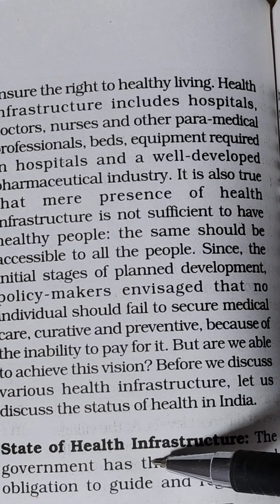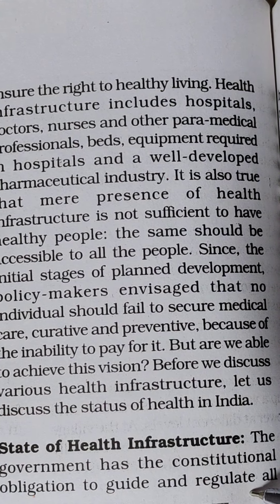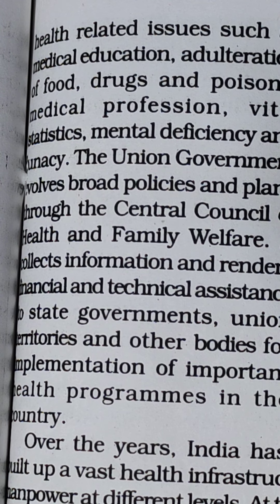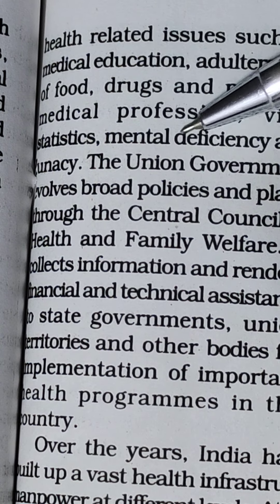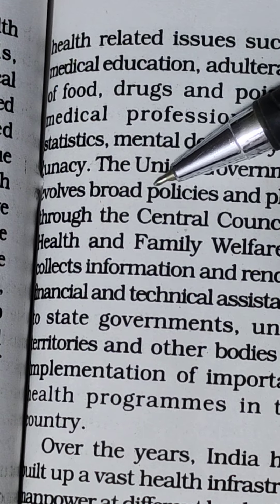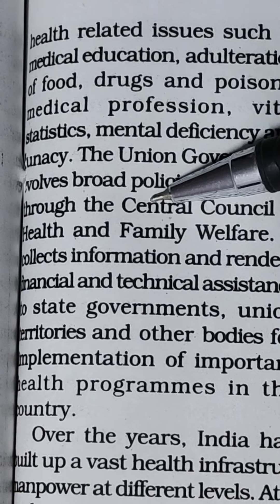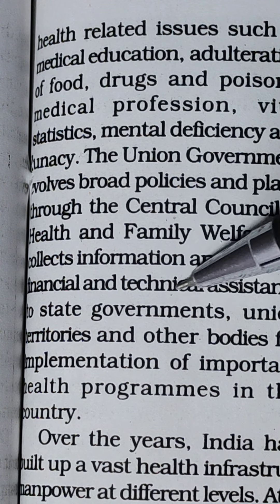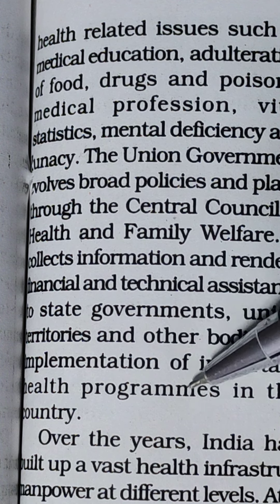Before discussing various health infrastructure aspects, let us discuss the state of health infrastructure. The government has the constitutional obligation to guide and regulate all health-related issues such as medical education, adulteration of food, drugs and poisons, medical profession, vital statistics, mental deficiency and lunacy. The union government involves broad policies and plans through the Central Council of Health and Family Welfare, collecting information and rendering financial and technical assistance to state governments, union territories, and other bodies for implementation of important health programs.